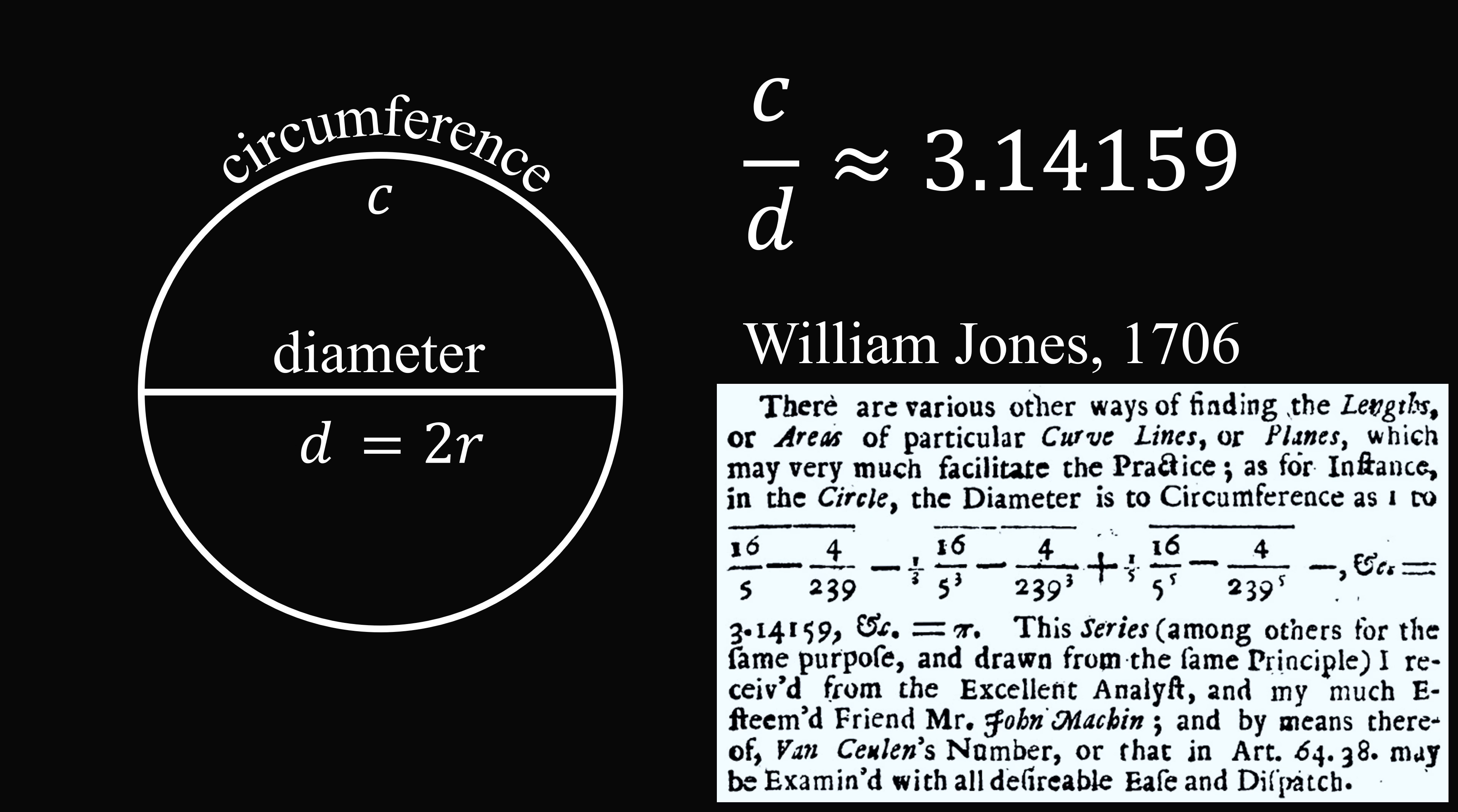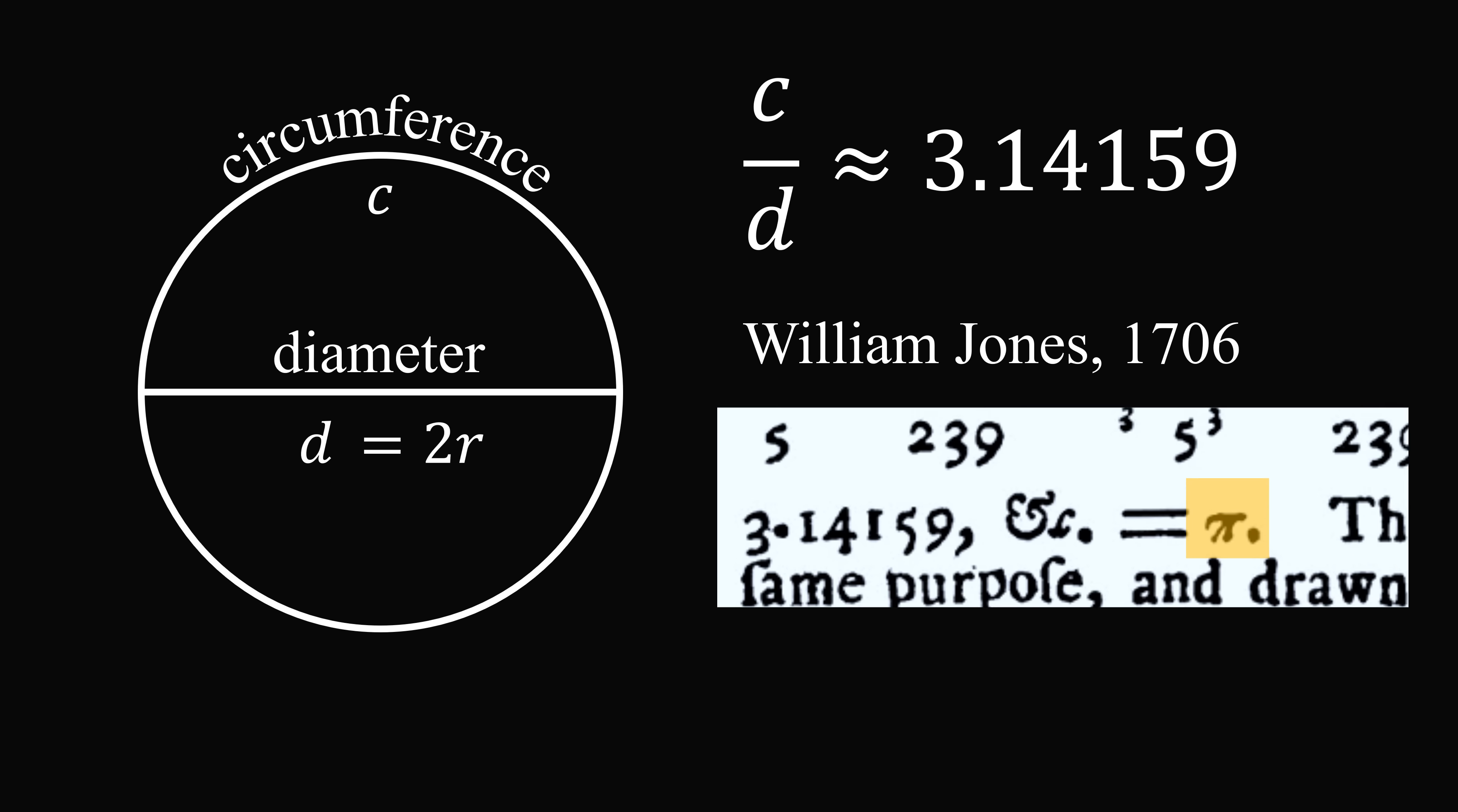That came much later, in approximately the year 1706, when William Jones used the symbol pi to denote exactly the ratio of the circumference to the diameter.